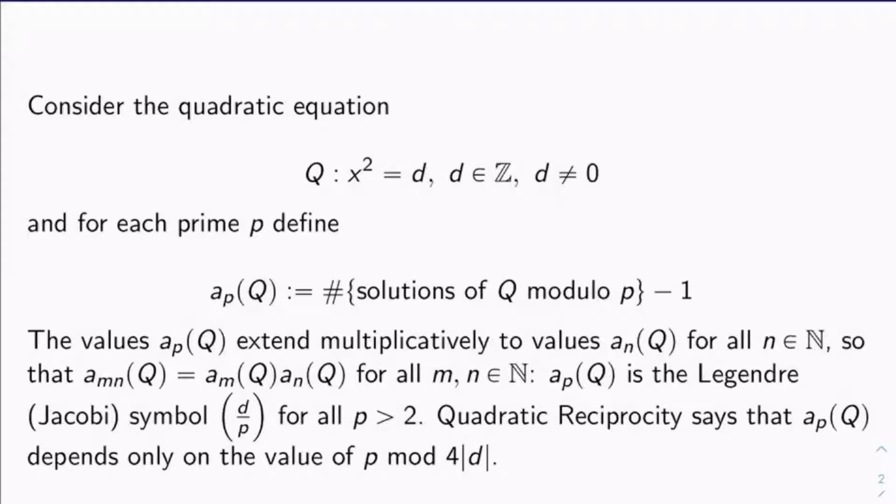Okay, let's define a_p(Q) to be the number of solutions to this equation mod p, where p is a prime, minus one. Now, the values of a_p(Q), they extend multiplicatively to values a_n(Q) for all n in N. What I mean is a_mn(Q) is a_m(Q) times a_n(Q) for all positive integers m and n.